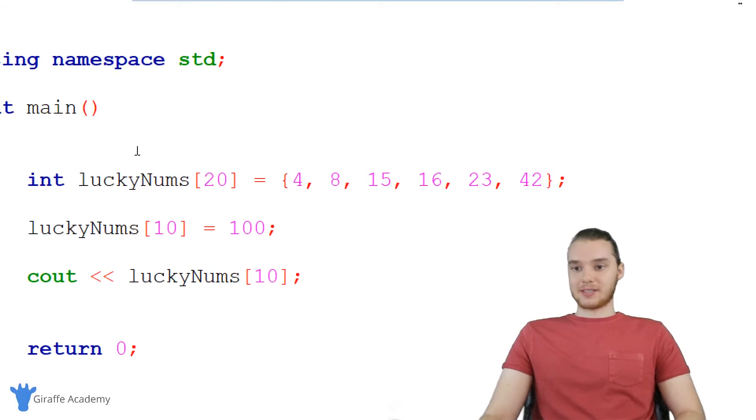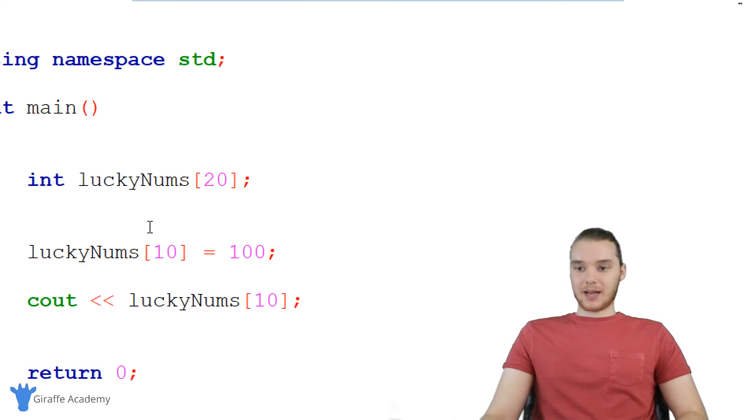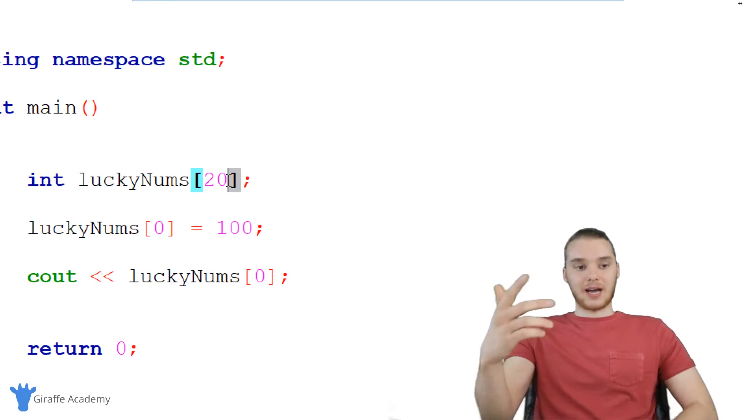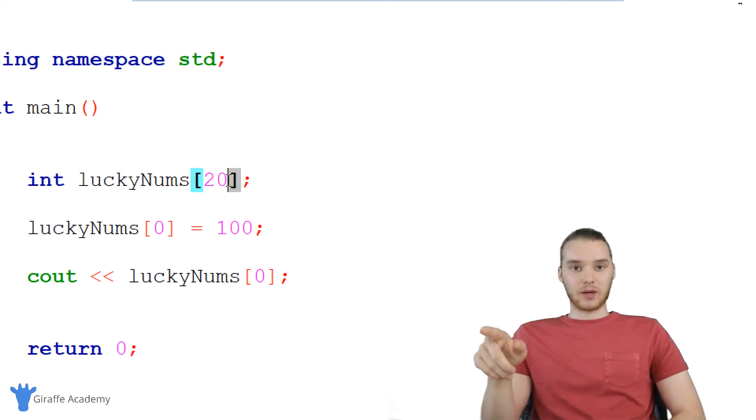Another thing you can do is just not give this any info right up front. So I can get rid of all of these values, and I could just put a semicolon here. And then down here, I can give all these different values. So I could say lucky nums zero is equal to 100. And now I can essentially just assign all the elements after we declare it. So like I said, a lot of times you might not know exactly what's going to go in the array when you declare it. And so you can just basically tell C how many items you want to hold in there, and then you can just fill the array up as you go. But that's really the basics of arrays, and arrays are very simple. So this is a very simple way to store multiple pieces of information.